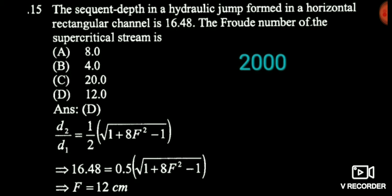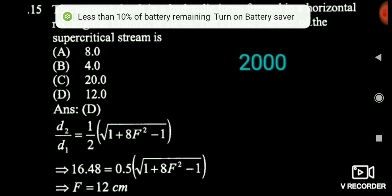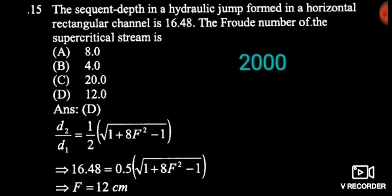So don't be panicked about the printing error. When you do the root of (1 + 8F²) and then subtract minus 1 outside, you will get your answer as 12. Minus 1 is not under root — minus 1 is independent. I recommend you all to solve this question by yourself with your calculator, and you will definitely get the correct answer.